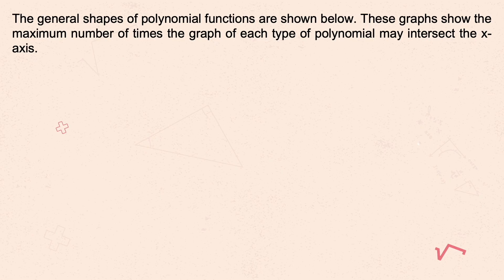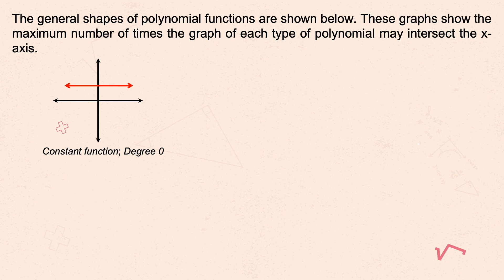In this discussion we will discover the behavior of polynomial functions in terms of their graphs and zeros or roots. The general shapes of polynomial functions are shown below. This graph shows the maximum number of times the graph of each type of polynomial may intersect the x-axis. The degree of a polynomial tells us the number of times the graph would intersect the x-axis. Starting with the constant function, which has a degree of zero — it will never intersect the x-axis; it's just a horizontal line.